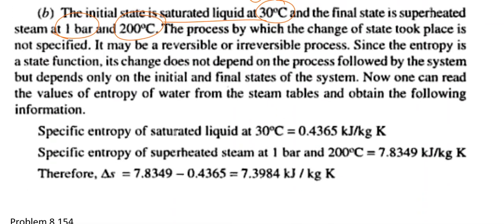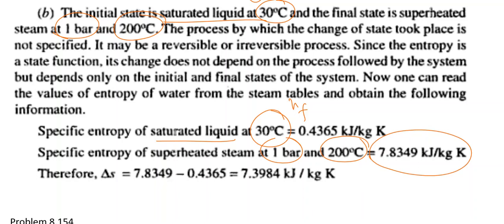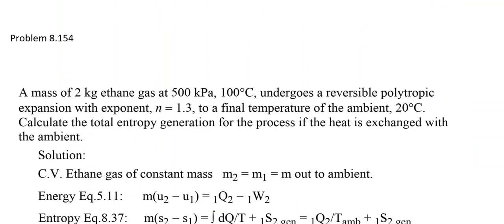Using the steam table at 30 degrees centigrade, the entropy of the saturated liquid SF is 0.4365 kJ/kg·K. For superheated steam at 1 bar and 200 degrees centigrade, the entropy is 7.8349 kJ/kg·K. The change in entropy is therefore 7.8349 minus 0.4365, which equals 7.3984 kJ/kg·K.